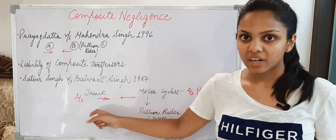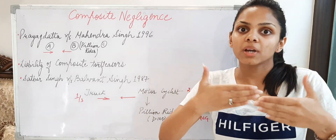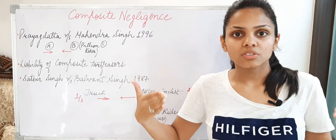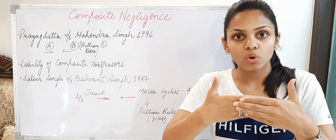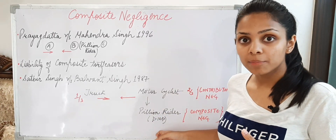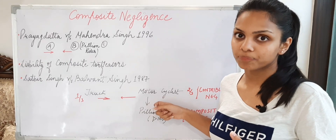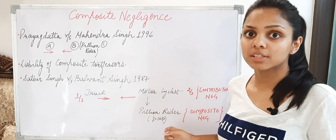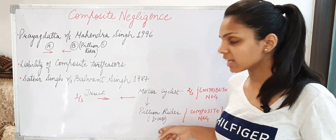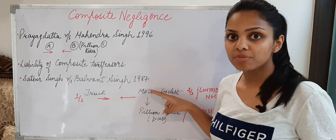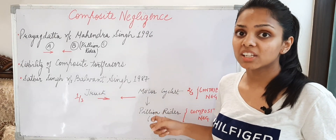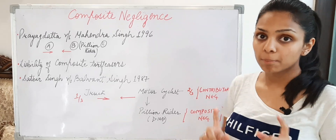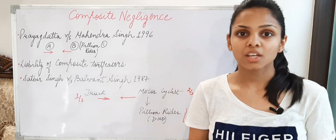What happened in this case? There was a truck driver and a motorcyclist. Both were again coming in opposite directions. There was a pillion rider behind the motorcyclist — a person sitting behind. Now when both drove negligently — there was negligence on the part of both — they had a collision, and as a result of this collision, the pillion rider died and the motorcyclist sustained injury. Now here there is both contributory negligence and composite negligence. As far as this pillion rider is concerned, there is composite negligence — because he is acting as a third party and due to the negligence of these two defendants, he sustained injuries.